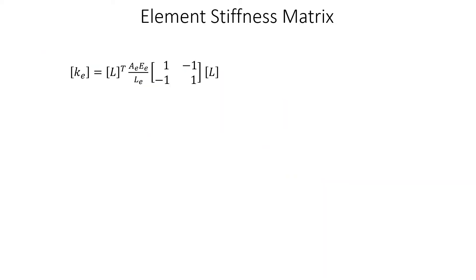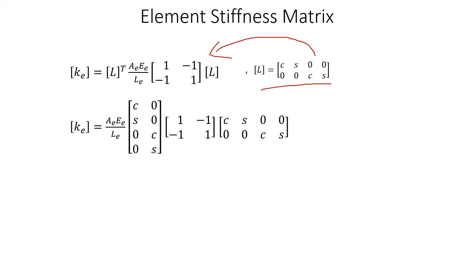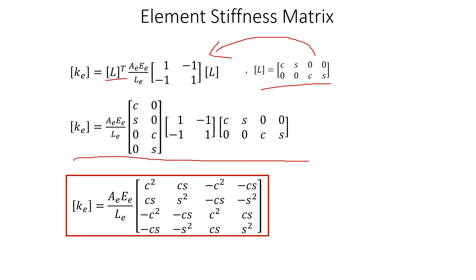Once the K matrix is defined, the next step is to solve it by substituting matrix L into the equation. Recall that matrix L is given by its defined form. Note that when taking the transpose of a matrix, rows become columns. Solving this operation gives us the K matrix for the plane truss member. Note that this K matrix is a 4x4 matrix, unlike the 2x2 matrix for the bar element. This 4x4 matrix represents the displacements U1, V1, U2, and V2.